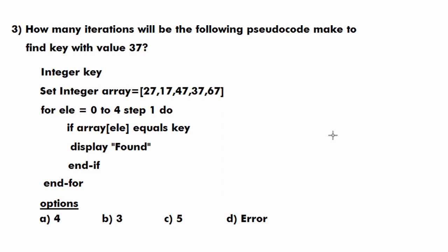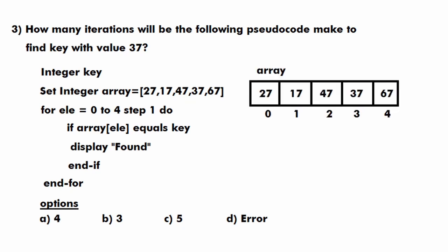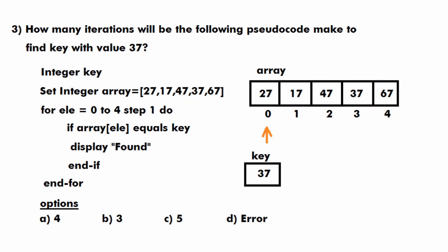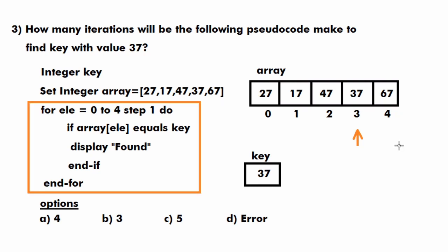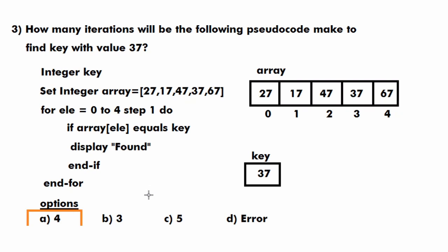This is a linear search algorithm. We search for the key element 37 in the array. Starting at index 0, we compare each element with the key and move forward if they don't match. At index 3 we find the element 37, which matches the key. This means we compared 4 elements in total, so the for loop iterates 4 times. The answer is 4, which is option A.